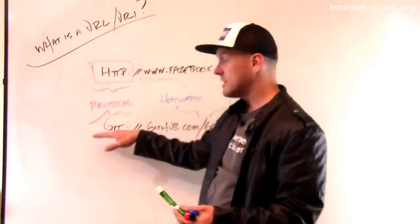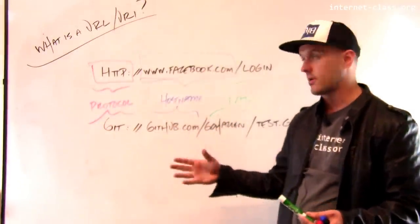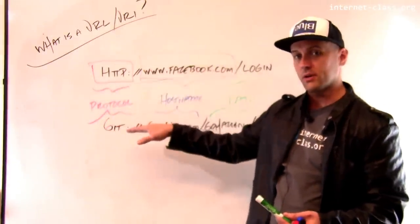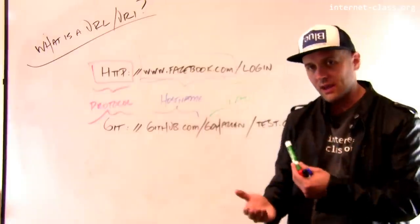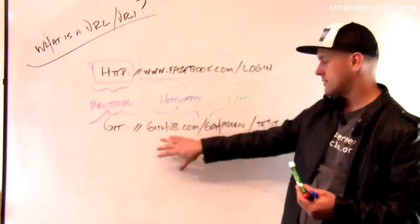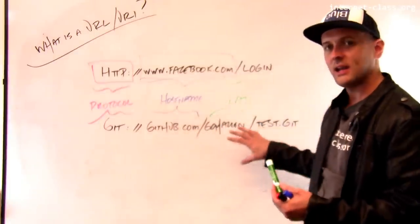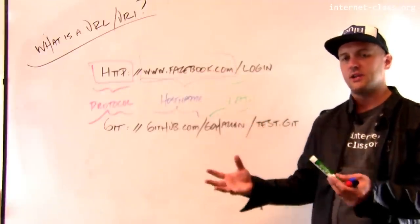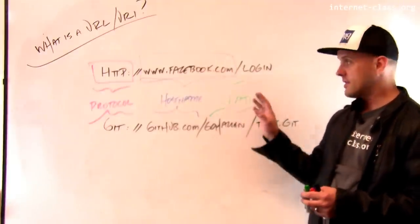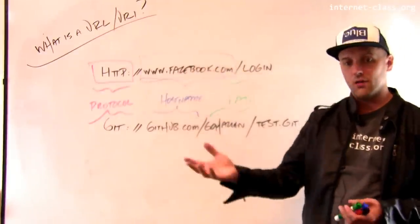So again, I identify, now this is using a different protocol, it's using the Git protocol rather than the HTTP protocol. So the protocol is sort of like, here's the language I want to speak, here's the person or the computer I want to talk to, and here's the document or here's some information about what I'm trying to accomplish. So this is the semantic of a URI, you see these all over the place.